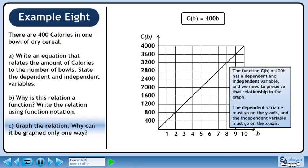The function C of B equals 400B has a dependent and independent variable, and we need to preserve that relationship in the graph. The dependent variable must go on the y-axis and the independent variable must go on the x-axis.